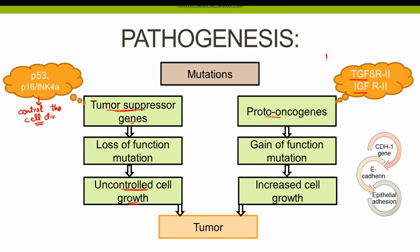Moreover, there is also a mutation of the beta-catenin gene. These are proto-oncogenes, which means they normally result in cell division and cell proliferation. The proto-oncogenes undergo a gain-of-function mutation, which means their function gets enhanced, resulting in increased cell growth and cell proliferation. So the mutations in tumor suppressor genes and proto-oncogenes together result in the formation of adenocarcinoma of the stomach.